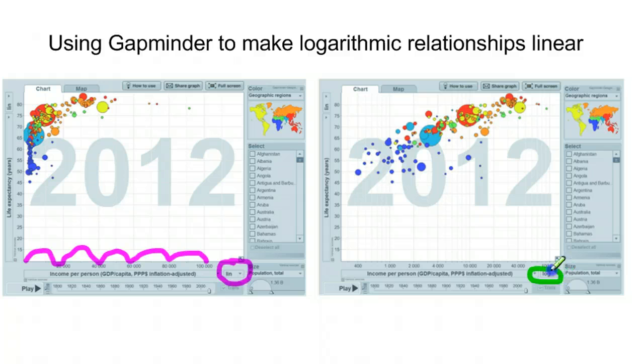So here, with a log scale, you're going from 400 to 800. You're going from 1,000 to 2,000 to 4,000 to 8,000. You'd go from 10,000 to 20,000 to 40,000 and so forth.